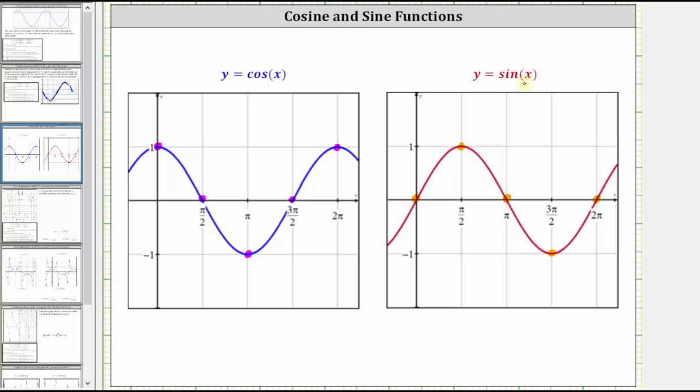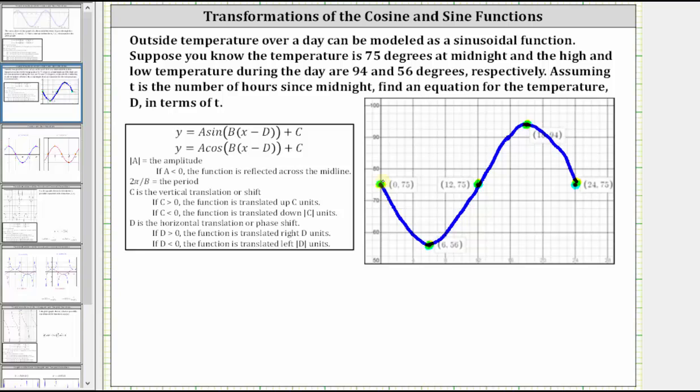So notice how for the basic sine function, the pattern is midline, maximum, and for our graph, we have midline, minimum, which means we have a reflection across the midline, and therefore a is going to be negative. Let's make a note of this, by indicating a is less than zero.